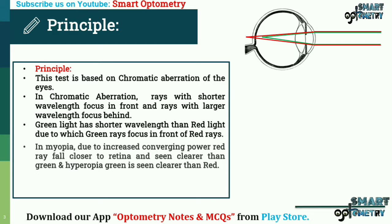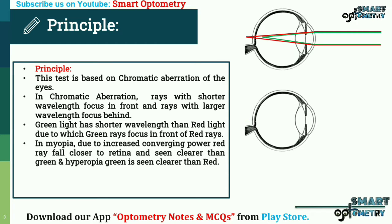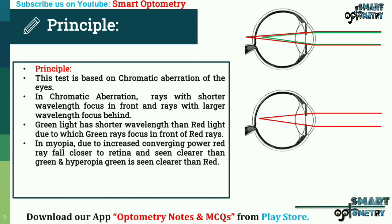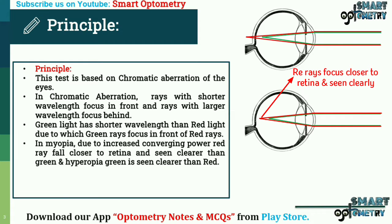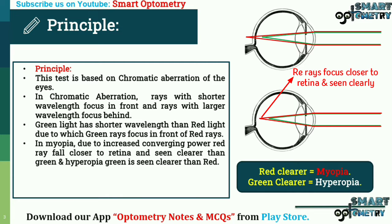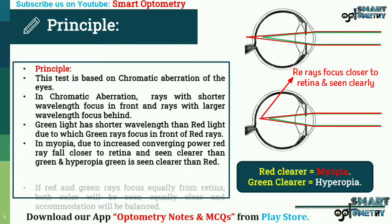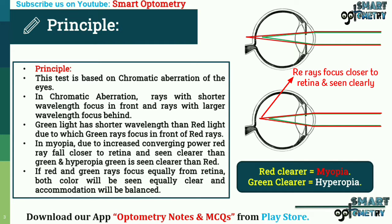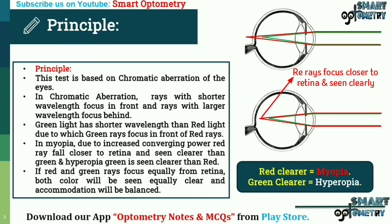In myopia, due to increased converging power, red rays fall closer to the retina and appear clearer than green. In hyperopia, green is seen clearer than red. If red and green rays focus equally from the retina, both colors will be seen equally clear and accommodation will be balanced.